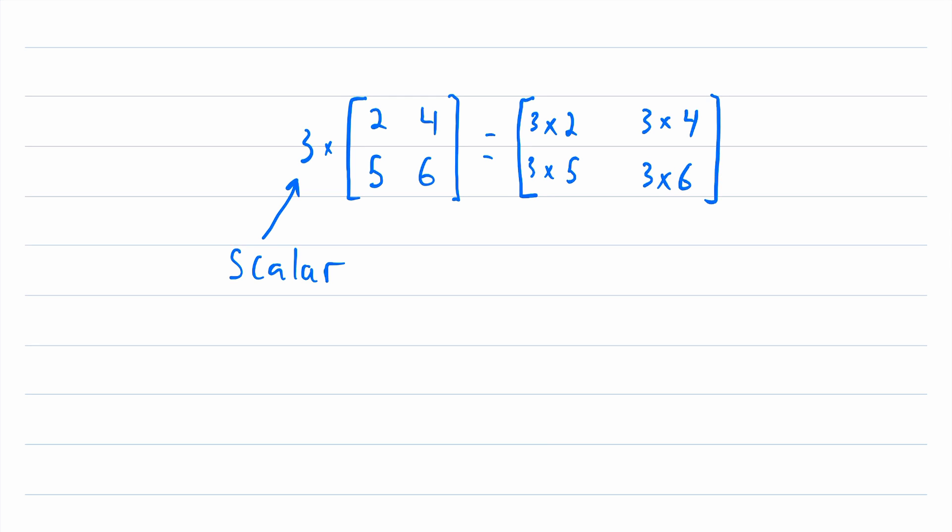So when we multiply a matrix by a scalar, we get a matrix with the exact same dimensions, just multiplying each entry by the scalar.